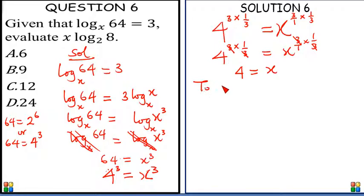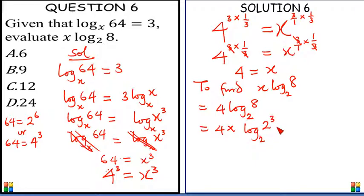To find x log 8 base 2, that is equal to, since our x is 4, 4 log 8 base 2. And this is simply 4 times log 2 raised to the power 3 base 2, because 8 is actually 2 times 2 times 2, which eventually is 2 raised to the power 3.